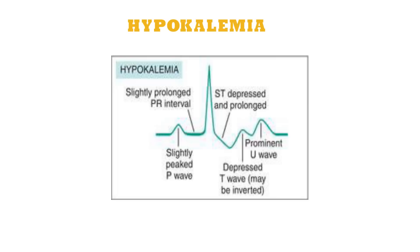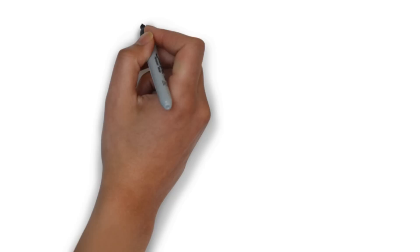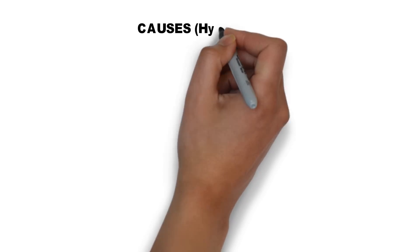Now, this is how the ECG in hypokalemia looks: slightly peaked P wave, slightly prolonged PR interval, ST segment can be depressed and prolonged, depressed T wave, and there can be a prominent U wave.